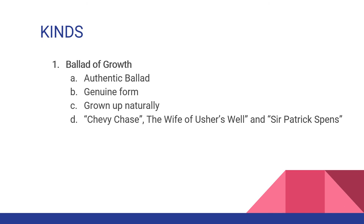The ballads are primarily of two kinds. The first is the Ballad of Growth, also known as the authentic ballad. This ballad has been in existence for ages; this form is genuine, having grown up naturally among a primitive race. Some of the best known authentic ballads are Chevy Chase, The Wife of Usher's Well, and Sir Patrick Spence.